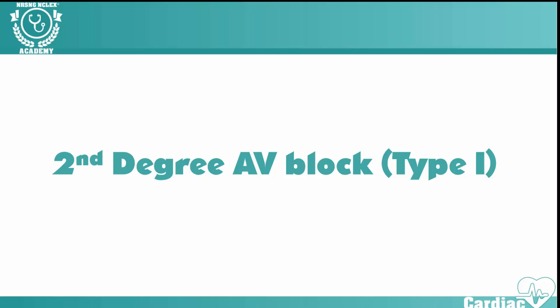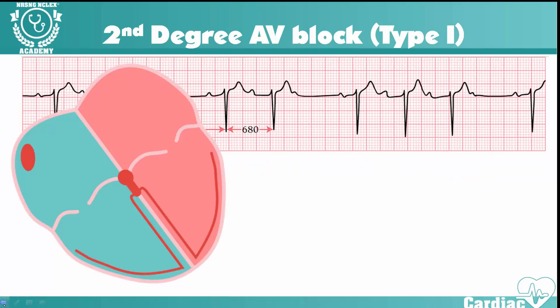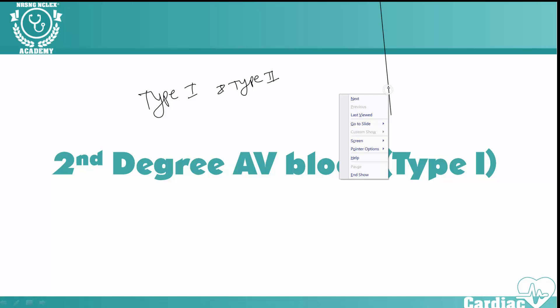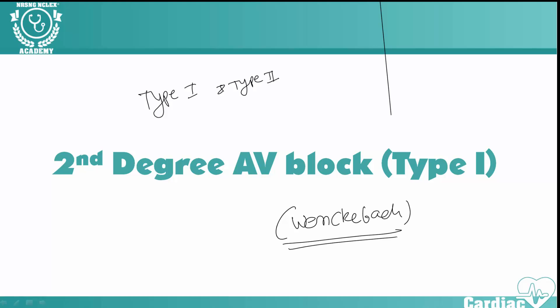In this video we're going to cover second-degree AV block type 1. There are two types of second-degree AV block: type 1 and type 2. In this video we'll cover type 1, and in the following video we'll cover type 2. Type 1 is also known as Wenckebach block. When someone says a patient is having a Wenckebach block, that means it's a second-degree AV block type 1 specifically.